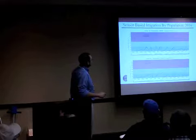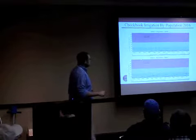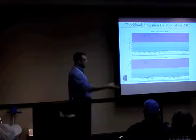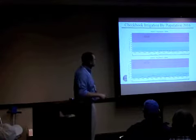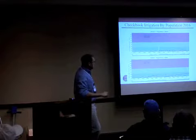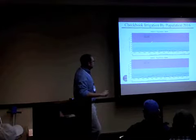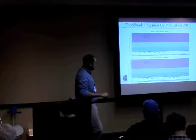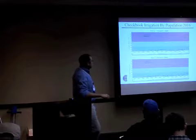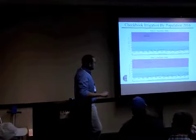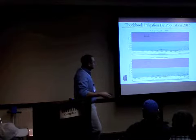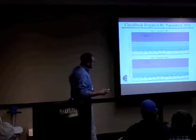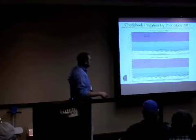The checkbook irrigation site was extremely over-irrigated — we could basically grow goldfish in that field, independent of population. Even so, from 28,000 to 34,000 in the same field irrigated identically, we're using more water and drying out more rapidly with higher population. We're not seeing a lot of difference between 34,000, 40,000, and 54,000, but there is a difference between 28,000 and the higher populations even when irrigating exactly the same.